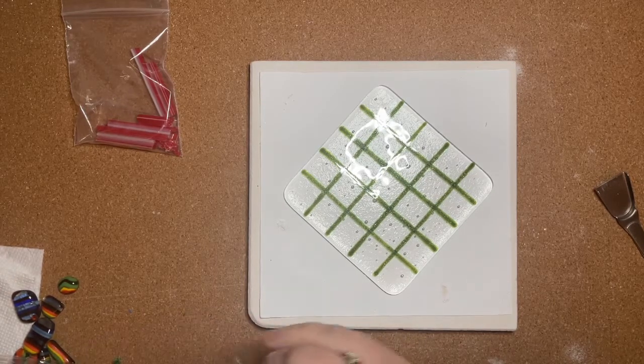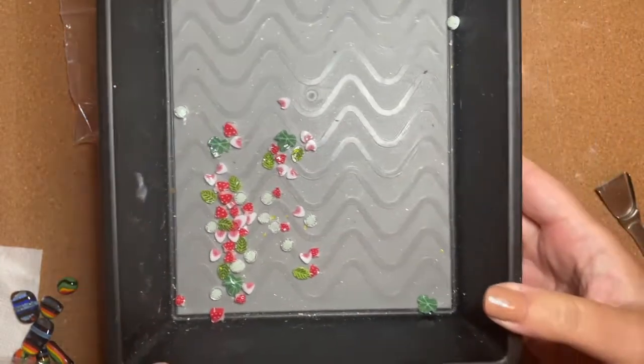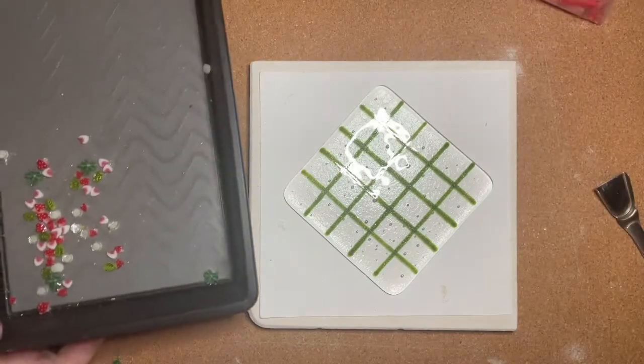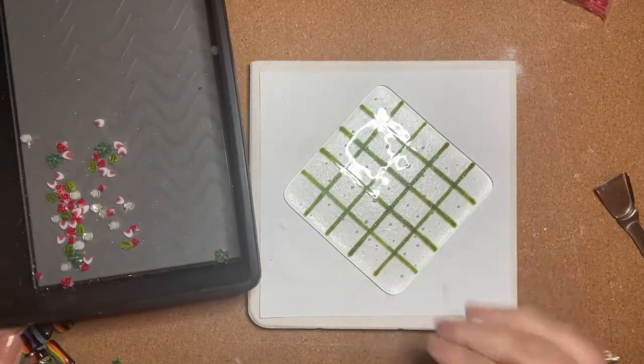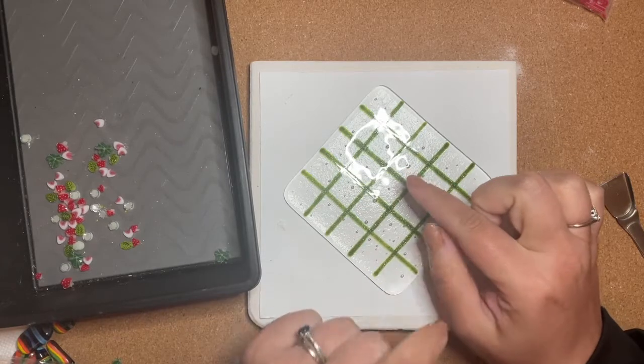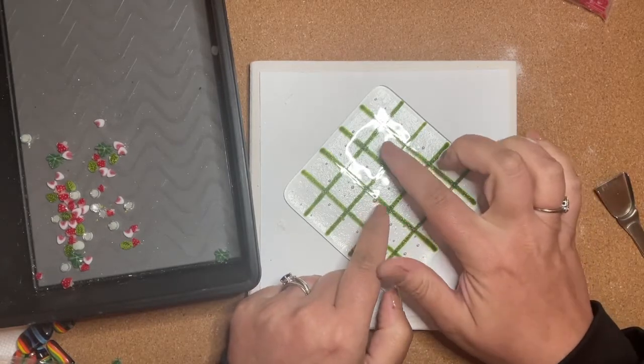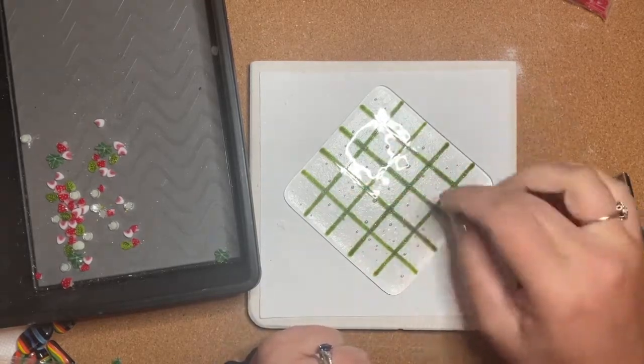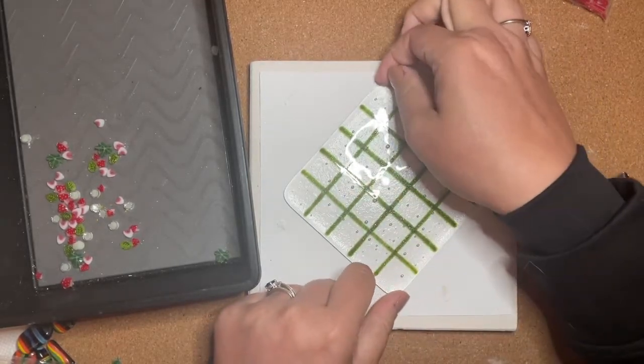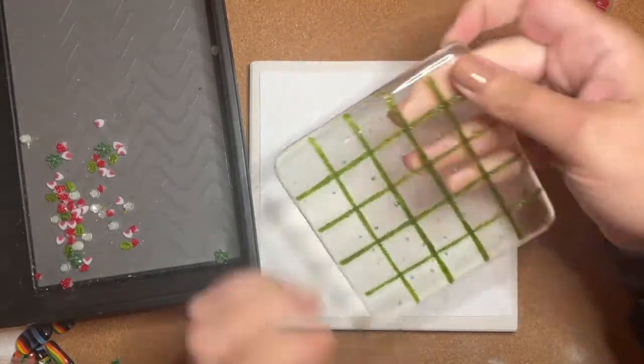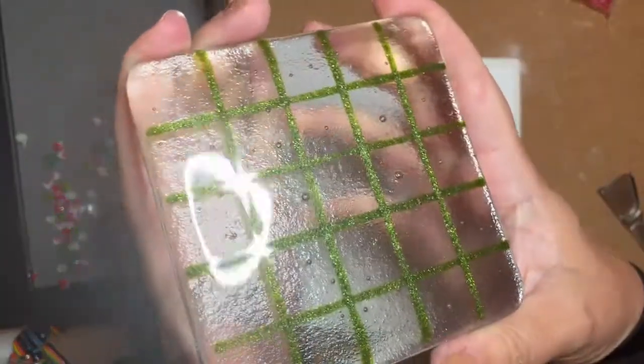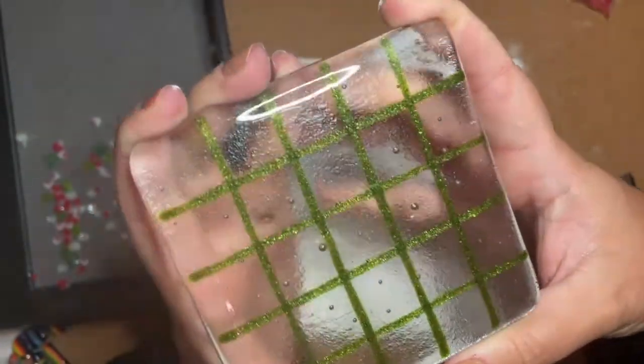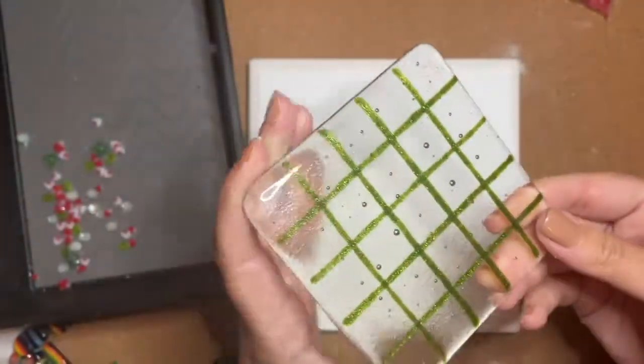So I went ahead and pre-cut all these pieces of merini, and I'm just going to place them on my checkerboard. I did it on purpose to have the merini pieces kind of extend over the aventurine line. I want to bring this back up to the camera so you could see how shiny this aventurine is. I don't know that the camera really captures it. It's just so beautiful.